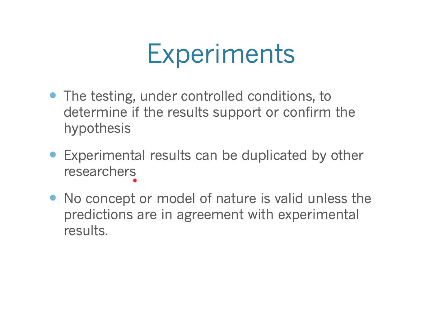Experimental results need to be able to be duplicated by other researchers. As I make this video, there was an important scientific announcement about a new class of high-temperature superconductors — very exciting, but so far the results haven't been duplicated, so a lot of people are skeptical. Not only do you need to get a result, but it has to be one you can duplicate and that other people can duplicate. No model of nature is valid unless the predictions it makes are in agreement with the experimental results.